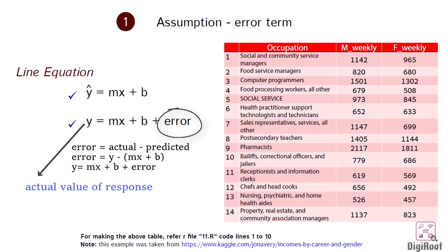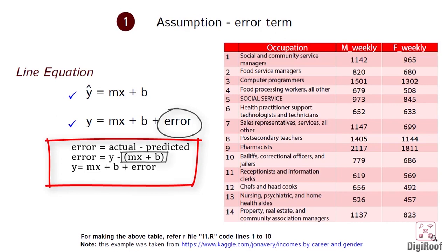Error, as already explained, is the difference between the actual and the predicted value of response. As you can see, if we take predicted value of response on the right side and substitute that value with the line equation, we would get y equal to mx plus b plus error.